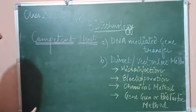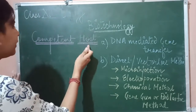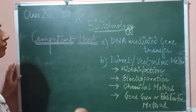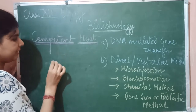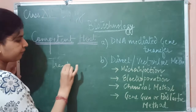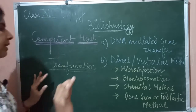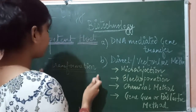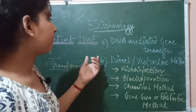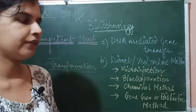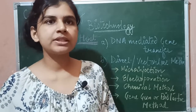Now let's discuss making the host competent. We have created the recombinant DNA, and now the host cell must be made competent for transformation. The host must be ready to accept that recombinant DNA. If we simply insert recombinant DNA into any cell, it will not necessarily be taken up — because accepting foreign DNA is not easy. We have to prepare the cell first, and that preparation is different for bacteria, yeast, plant cells, and animal cells.